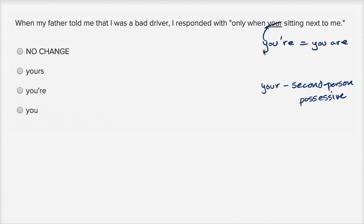This is one of those mistakes that I know I've done, even though I know it. If someone points it to me, or even if I look carefully, of course, this is you are, while this is possessive.